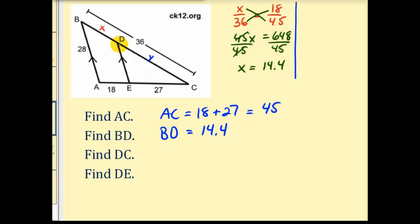Now to determine the length of DC, we have a couple options here. Let's go ahead and use the length of BD, which we just found is 14.4. So 14.4 to Y must equal 18 to 27. Again we'll cross multiply. 18 times Y would be 18Y must equal 14.4 times 27. That's going to give us 388.8. Now we'll divide both sides by 18. And Y is equal to 21.6. Therefore the length of DC is equal to 21.6 units.